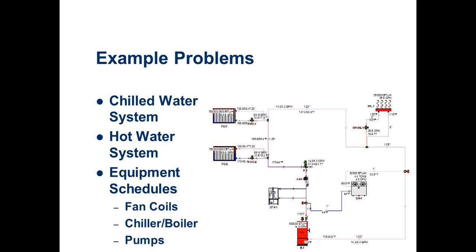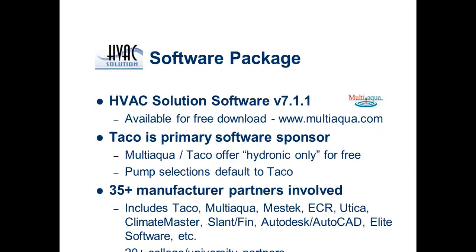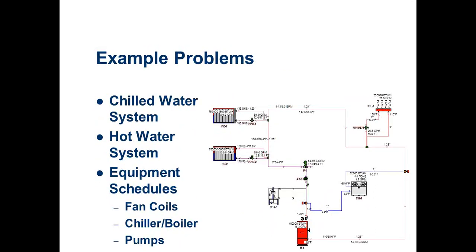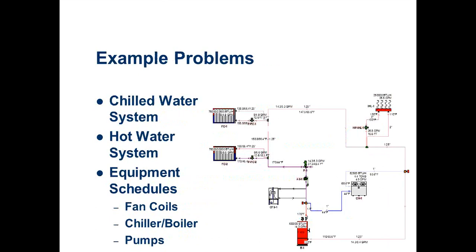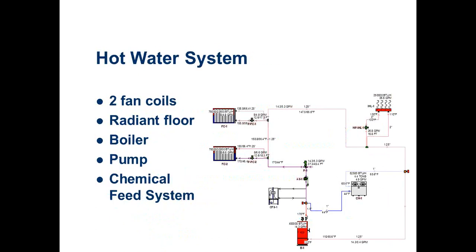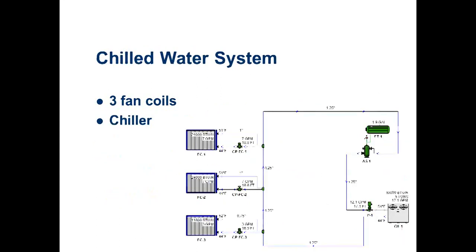There's lots of stuff you can do with it. We can do chilled water systems, hot water systems, and have it spit out Excel sheets with equipment schedules and bills of material. The free version covers the hydronic portion. It can do hot water systems, terminals, radiant floors, radiators, fan coils, boiler systems, heat exchangers, swimming pool heating, domestic heating, and chemical feed systems.